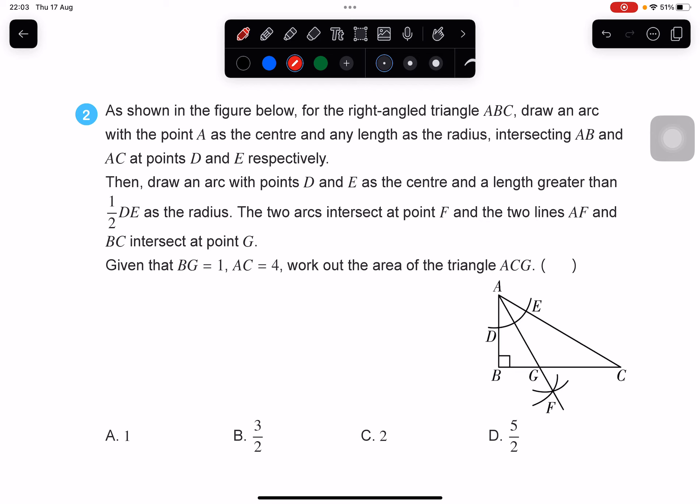So it is saying that I have a right angle triangle ABC, and I'm drawing an angle bisector through ABC that is AF.